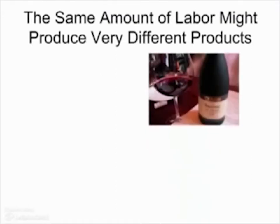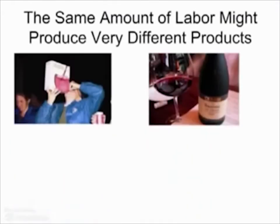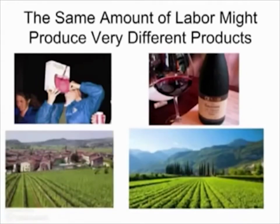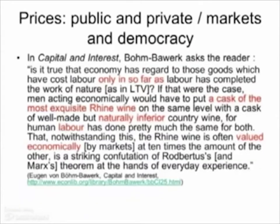The same amount of labor might produce two very different products. You could have a very fine wine or a very cheap wine that people won't pay very much for, and they might both be produced with the exact same amount of labor, just on different land. This brings us back to the question of land and the value of land. There's a quote by Böhm-Bawerk which essentially makes the same point about very fine wine and inferior wine being produced using the same amount of labor.